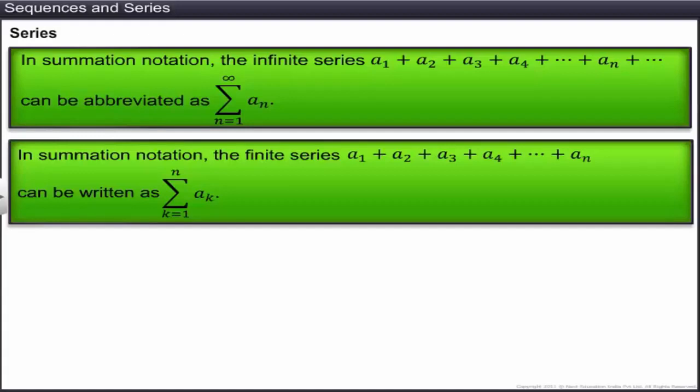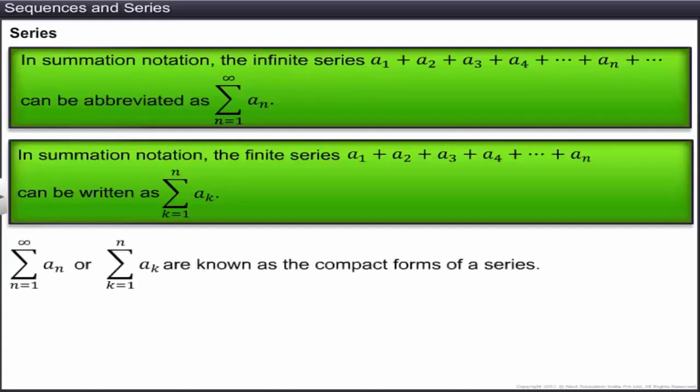In summation notation, the infinite series a₁ + a₂ + a₃ + … can be abbreviated as Σaₙ, where n goes from 1 to infinity. Similarly, the finite series a₁ + a₂ + … + aₙ can be written as Σaₖ, where k is from 1 to n. This summation representation is also known as the compact form of the series.